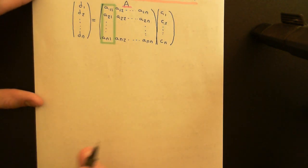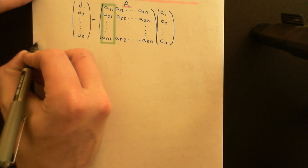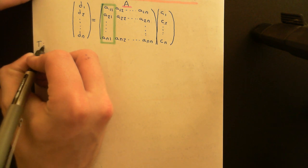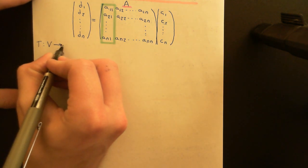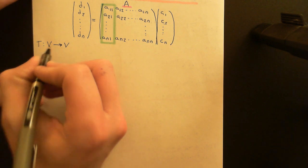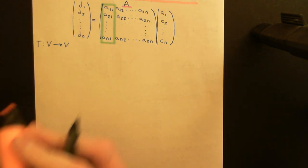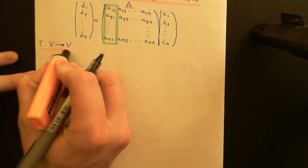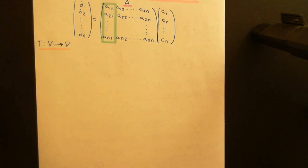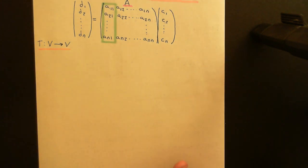Let me write something down to properly communicate the scope of the problem. We have our linear operator T, which is a mapping between the vector space V and itself. The vector space is finite dimensional, so it will have a basis, and T will bear all the nice properties of linear operators.